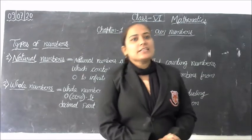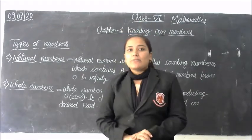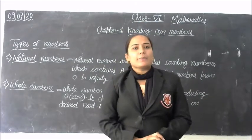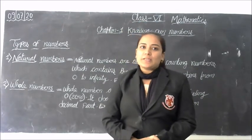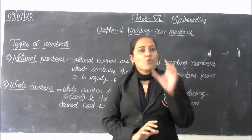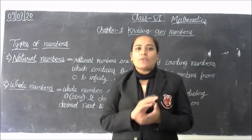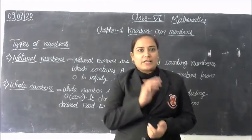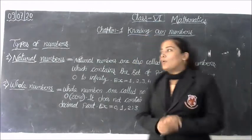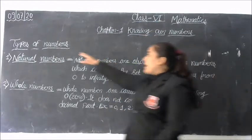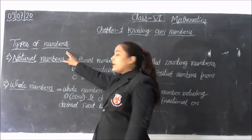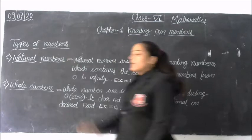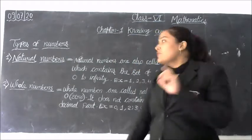In mathematics, a number is a value that can be used to represent a quantity of any object. Now, types of numbers — there are 5 types of numbers.